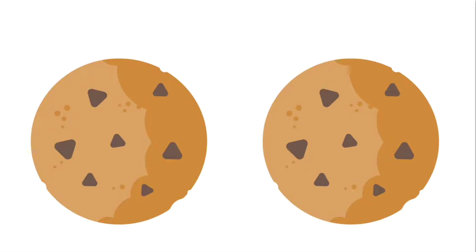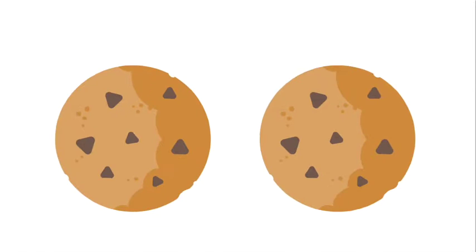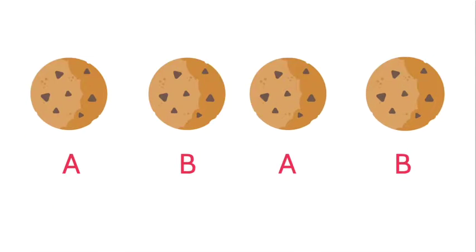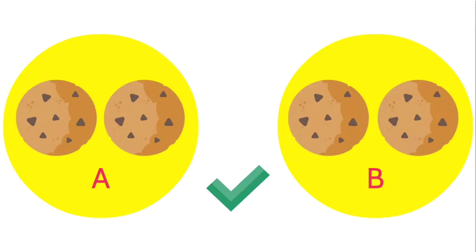Tetrad tests present four samples to panelists that are two pairs of like samples — two are sample A, and the other two are sample B. Panelists are asked to group the like pairs together. The nature of the difference is typically not specified.